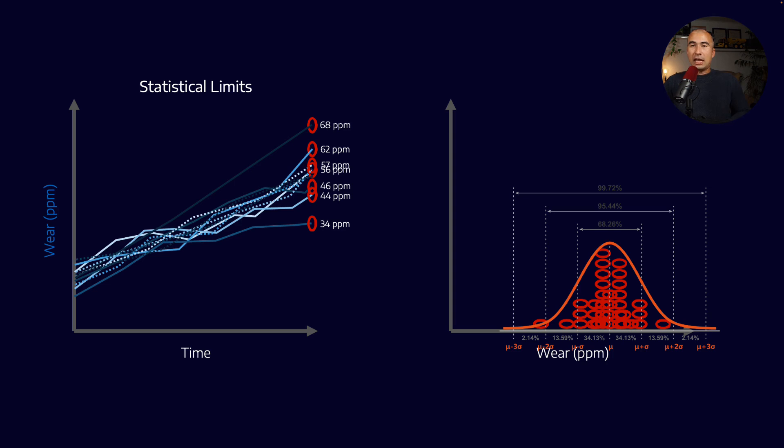So often what we'll say is anywhere between one standard deviation from the average or the mean, we'll call those normal results. Anything that's beyond that becomes a caution. Anything that is two standard deviations beyond the mean becomes an alarm. So that's a way that we can apply these.